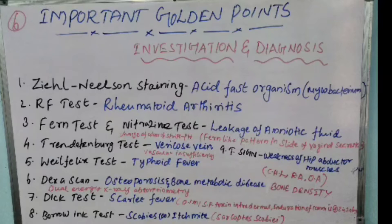The first point is Ziehl-Neelsen staining. Ziehl-Neelsen staining is done to find out acid-fast organisms, specially Mycobacterium. The second point is RF test, done to find out rheumatoid arthritis.